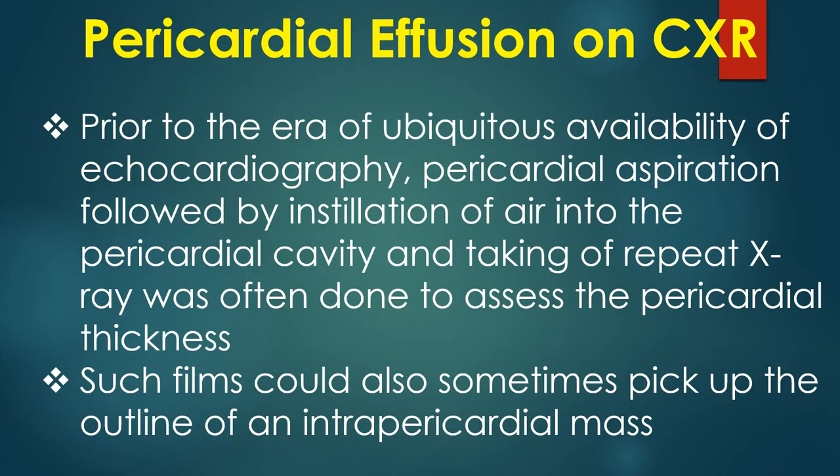Prior to the era of ubiquitous availability of echocardiography, pericardial aspiration followed by installation of air into the pericardial cavity and taking a repeat chest X-ray was often done to assess the pericardial thickness. Such films could also sometimes pick up the outline of an intrapericardial mass.